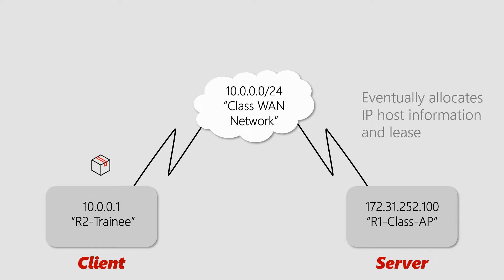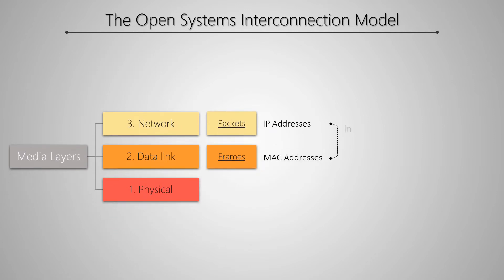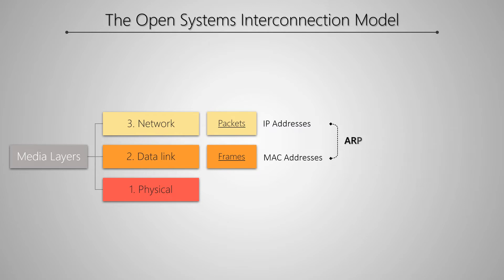Finally, in episode 29 we mentioned that when IP hosts want to communicate over an IP network they need to know each other's MAC addresses as well. Thus ARP, as a critical function of the Internet Protocol suite, will be used to discover and map layer 2 MAC addresses to their respective layer 3 IP addresses. We also found out that static ARP records whose mode has been set to reply-only can act as effective security measures to safeguard your network from unwelcome traffic.